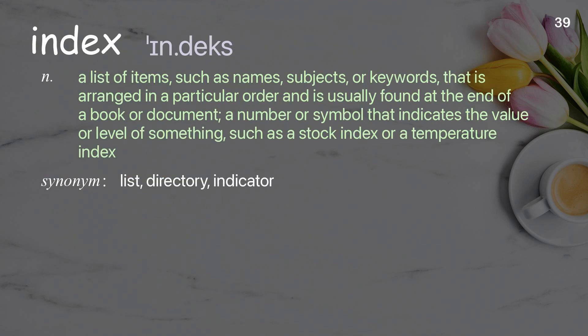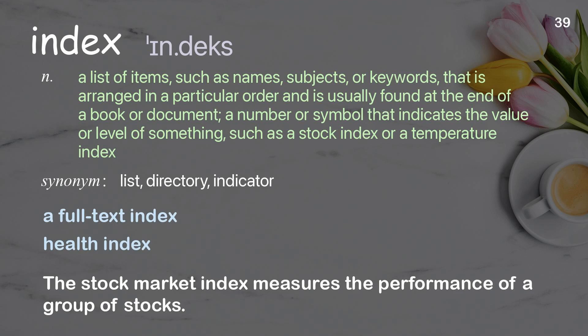Index. A list of items, such as names, subjects, or keywords, arranged in a particular order and usually found at the end of a book or document; also a number or symbol that indicates the value or level of something, such as a stock index or a temperature index. The stock market index measures the performance of a group of stocks.